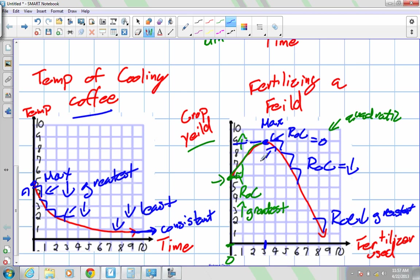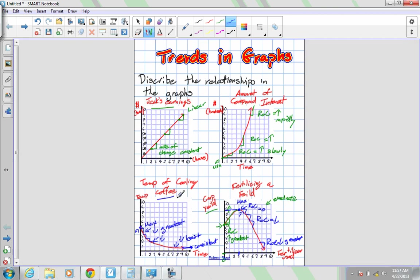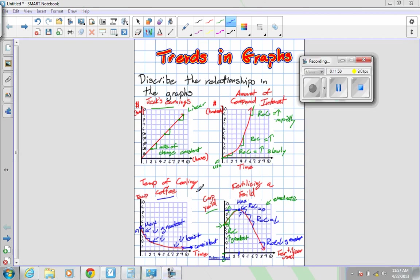So there's many different ways we can describe these graphs. There's specific wording we use, maximum, minimums, decreasing rates of change, and increasing rates of change.